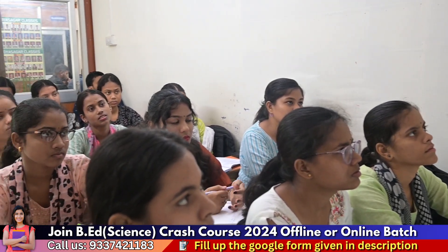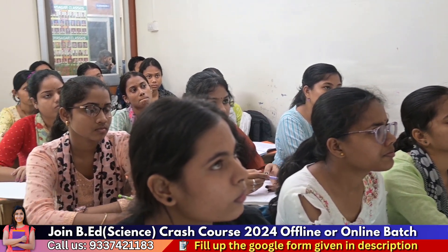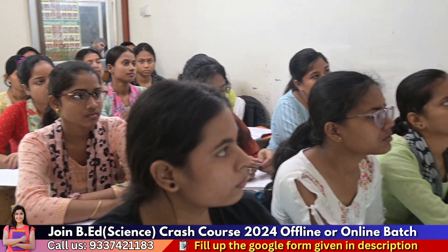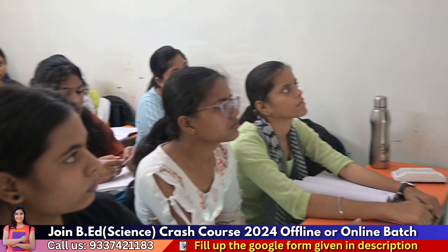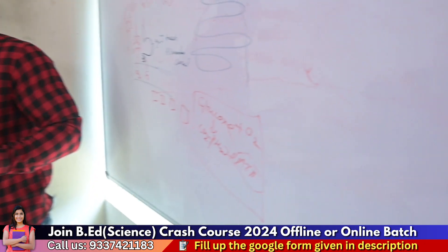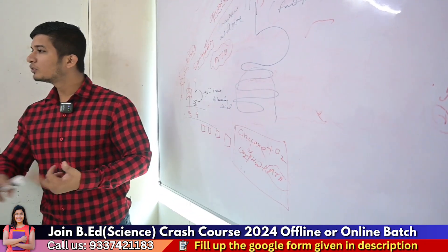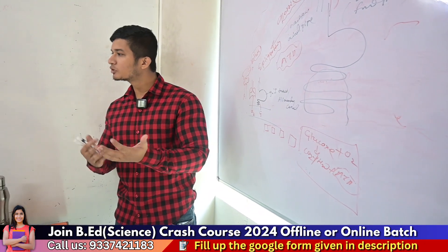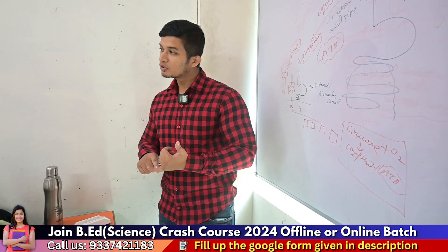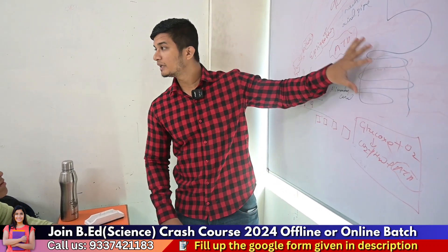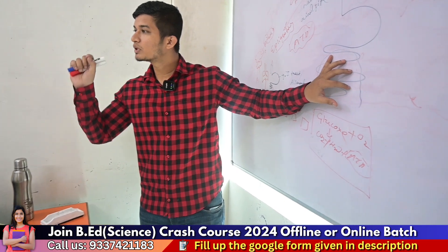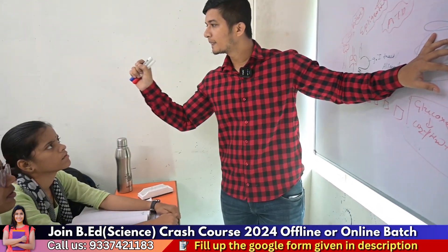We know that there are glands such as the pituitary, pineal, parathyroid glands, pancreas, and thyroid gland. But there are also some glands present in the lumen of the bowel. These are endocrine glands called enteroendocrine glands.